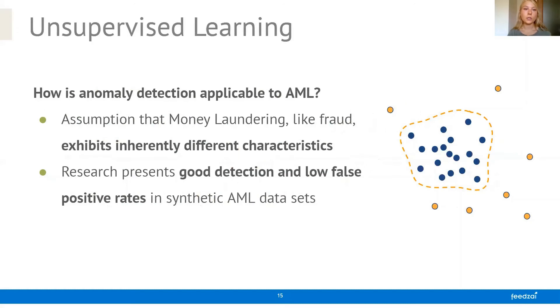And then we started experimenting with unsupervised learning and we used anomaly detection methods. And we did that for two reasons. First of all, it is realistic to assume that money laundering, just like fraud, exhibits different characteristics from normal transactions. And the other reason is that research had already frequently applied these kinds of methods and they presented good detection rates and low false positive rates, mostly in synthetic AML datasets where they artificially created the anomalous instances.